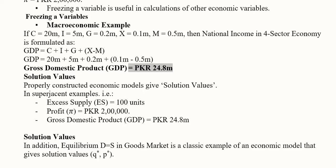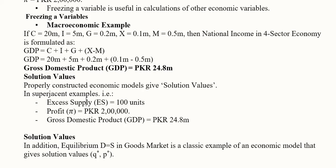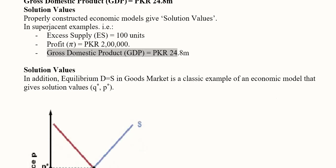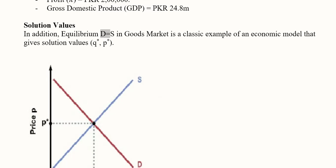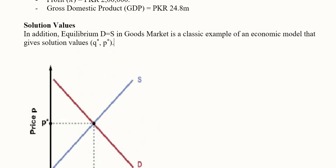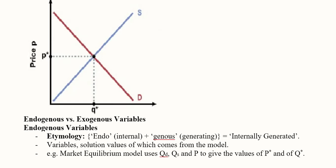To summarize: in all three examples, solution values were found. In the first, excess supply was the solution value; in the second, profit was the solution value; and then we had the solution value of GDP. We can also graphically observe these solution values — when demand and supply are equal we get the equilibrium output and equilibrium price, which we can find graphically or with simple algebra.